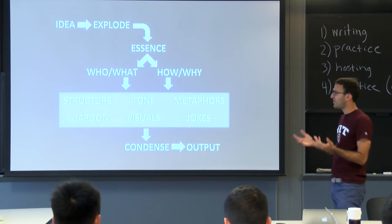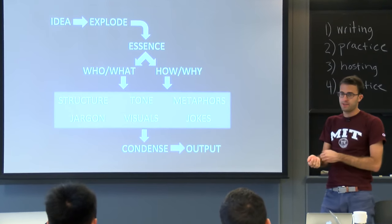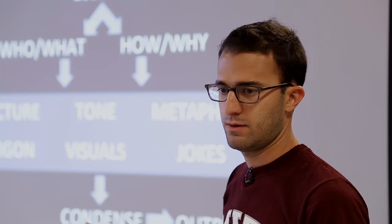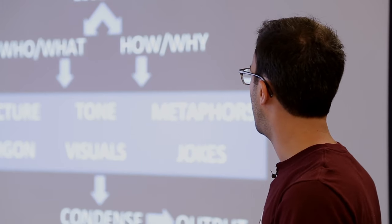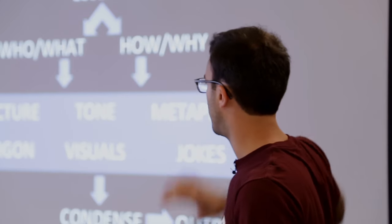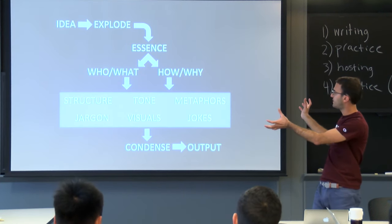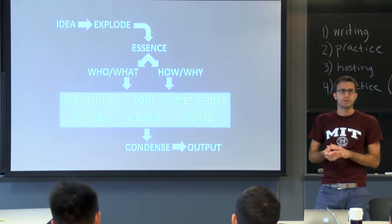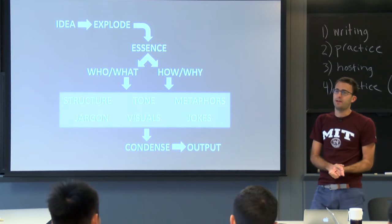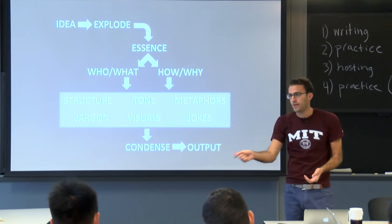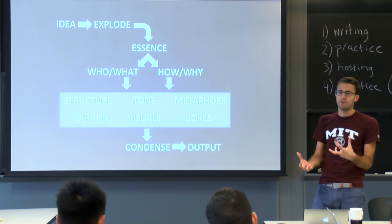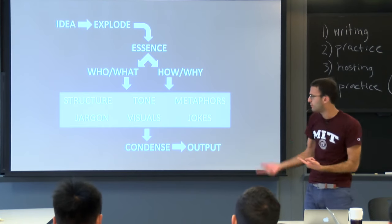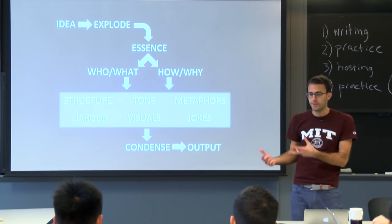Metaphors and jokes — it's really hard to be funny, so if you think you can and want to try, go for it, but generally I try to avoid jokes. Metaphors are similar; it's kind of hard to write a good metaphor. The stuff on the left — structure, tone, jargon, visuals — is in every video. Metaphors and jokes are more advanced. Once you get your first draft together, you condense it and write your script. This doesn't happen once — typically a script goes through 4 to 12 revisions before we shoot, up to and including rewriting 5 minutes before.